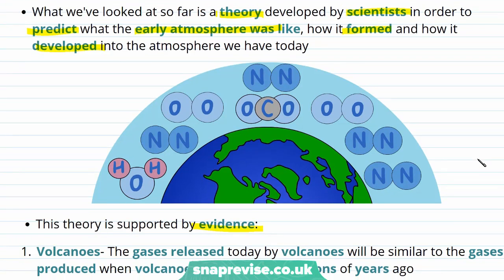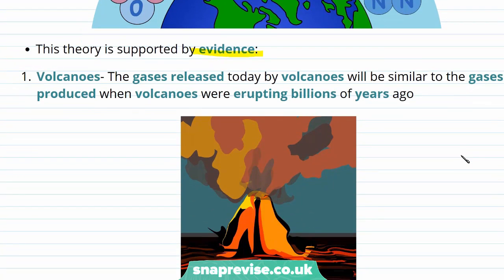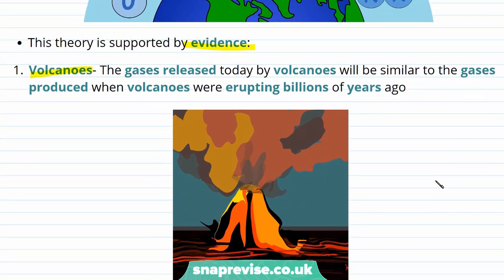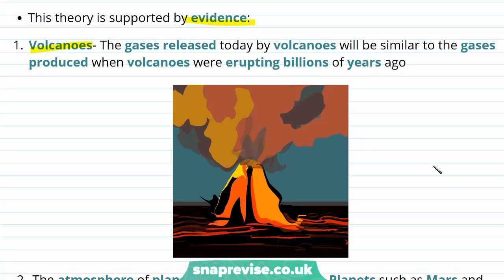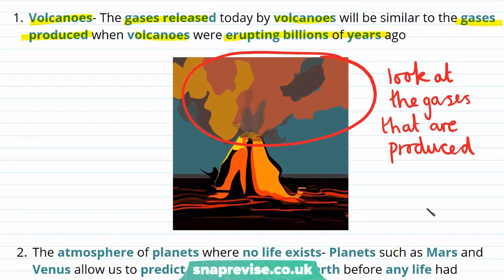There are four important pieces of evidence when discussing how our atmosphere was formed. The first is volcanoes. In our video on the early atmosphere, we saw that it contained high levels of carbon dioxide and water because these were gases emitted during volcanic eruptions. We still have volcanoes today, and the gases released when volcanoes erupt today are very similar to those produced billions of years ago. Therefore, if a volcano erupts, we can look at the gases produced, giving us an idea of what gases would have been released when the Earth's crust was forming.